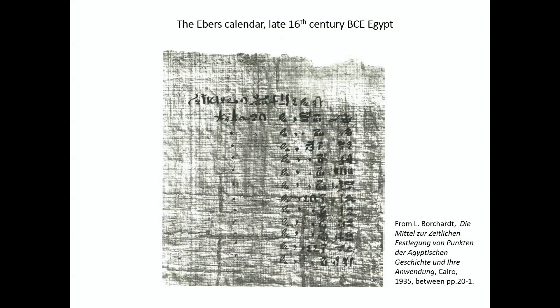If we start from ancient Egypt, we find that very few documents, very few texts from ancient Egypt can actually qualify as calendars. This one here in front of you is quite an old one. It's called the Ibis calendar. It's not really a calendar, as we'll see in a minute.